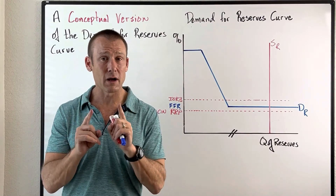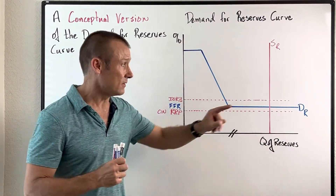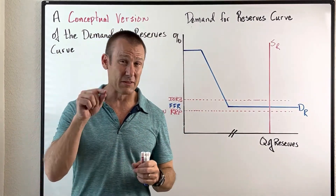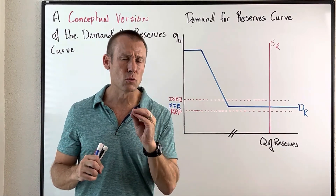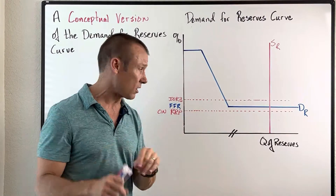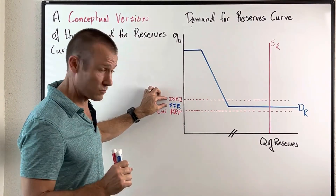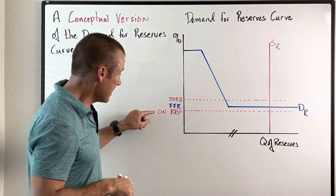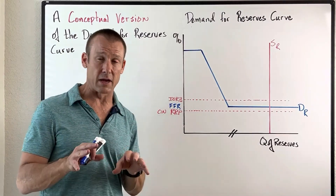Under this new policy framework, the key to understanding it is to understand this demand for reserves curve that we've been talking about. In this particular video, I'm going to get to some of the nuances about this curve and about the federal funds rate in regards to the interest rate on reserve balances. I do not have them equal right now, so I'm going to talk about that — and the overnight reverse repurchase agreement rate.